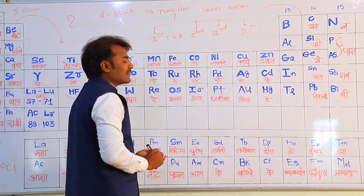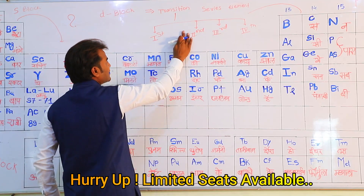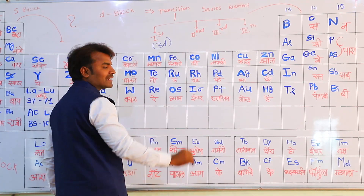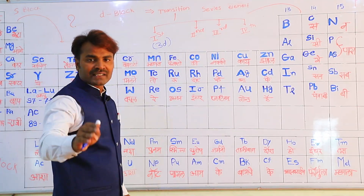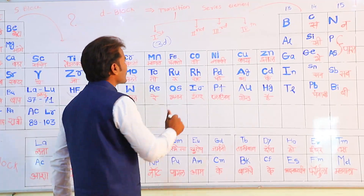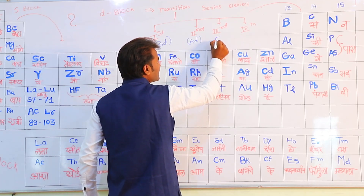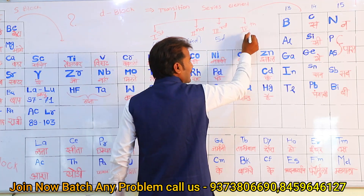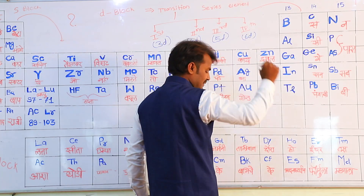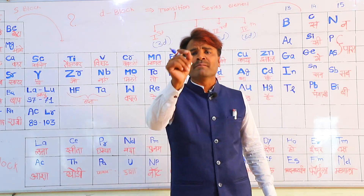The first transition series element has another name — 3D series. The second is called 4D series. The third is 5D series. And the fourth transition series is called 6D series. This is just an introduction to D-block. Now let's move to the main point.